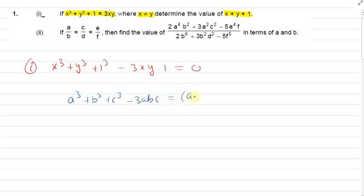This identity equals the summation of a, that is (a + b + c), times half of summation of (a - b) whole square. Now we know that when this is zero, a and b are equal to c.